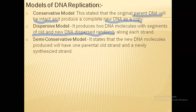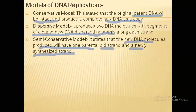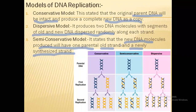The most accepted theory is the semi-conservative model. The semi-conservative model states that the new DNA molecule which is produced will have one parental strand — that is, the old parental strand — and one newly synthesized strand. That is called the semi-conservative model of DNA replication.